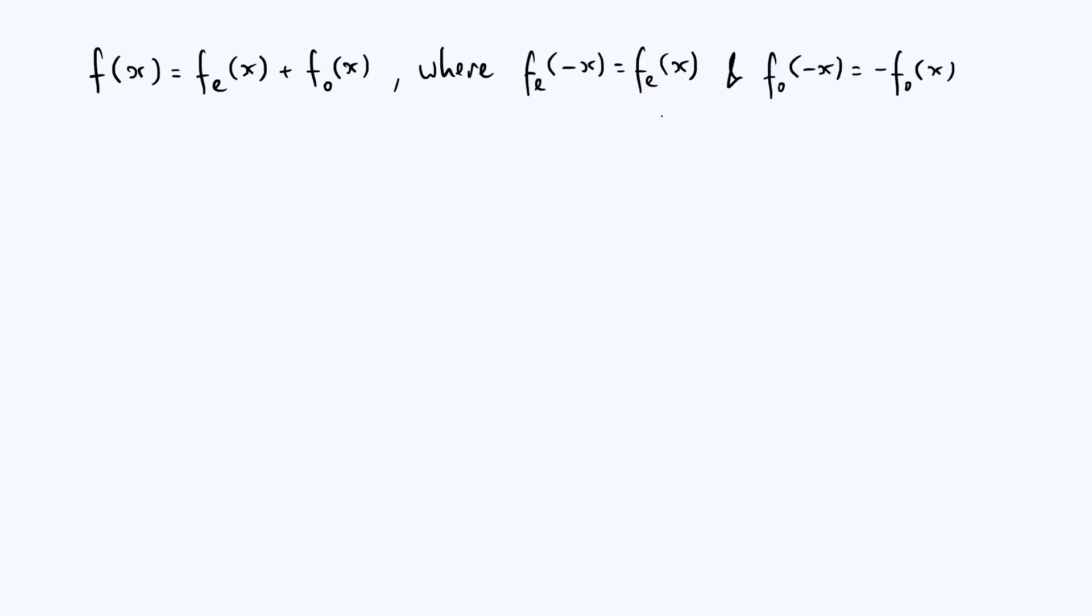And fo has the property that if you flip the sign of the argument x, then you also flip the sign of the function itself. So that's the defining property of an odd function.